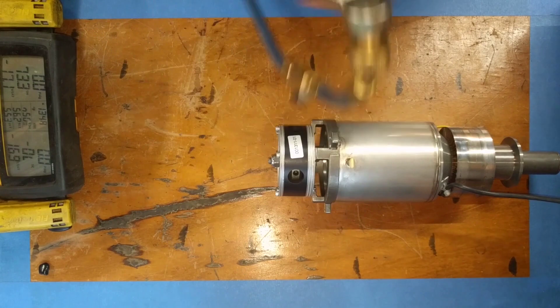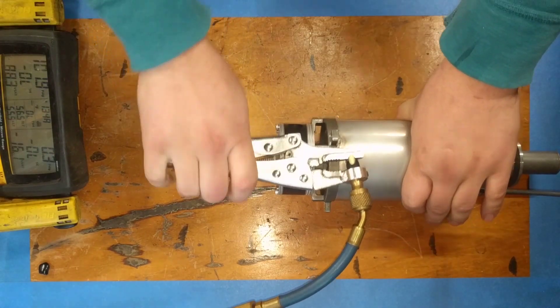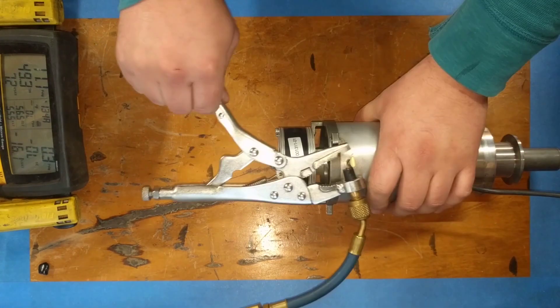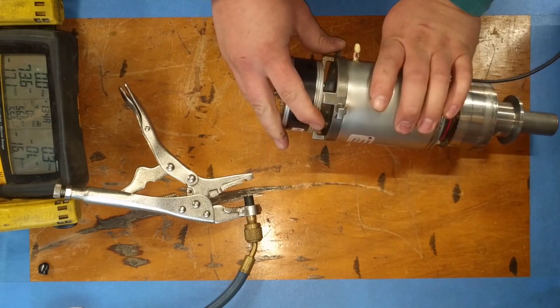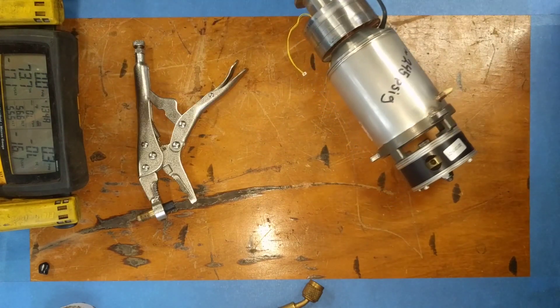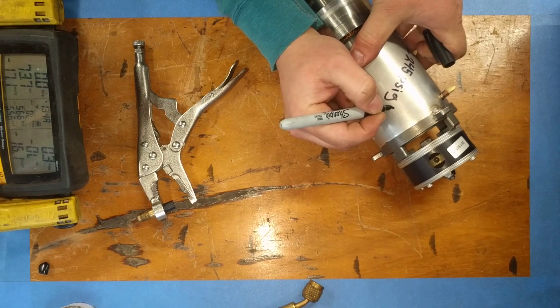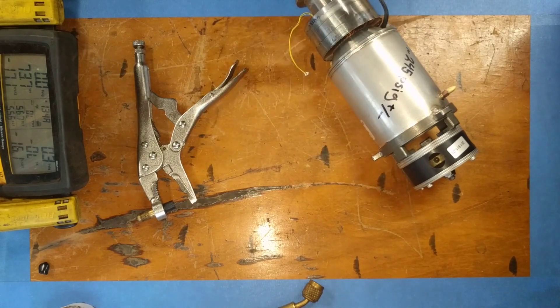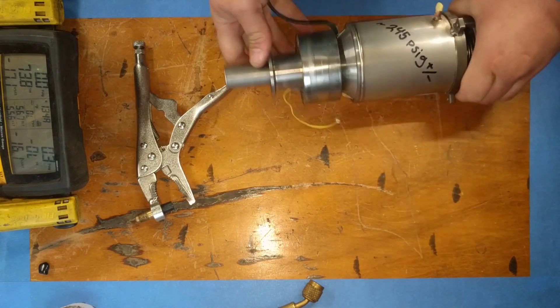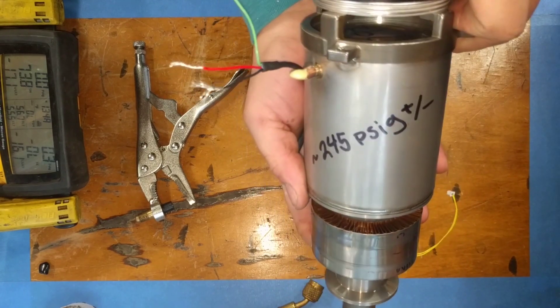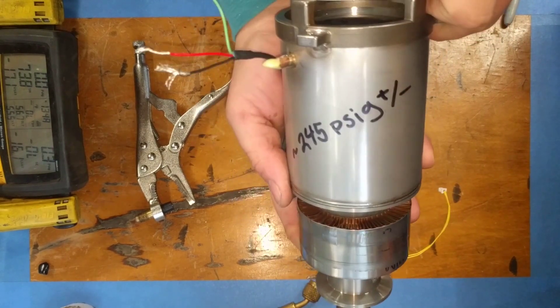On the digital gauge we got about 174 psi or so, but there was another gauge hooked up in the loop that read about 230, but that fitting was leaking pretty good. So I figured somewhere around 245 psi in the actual body.